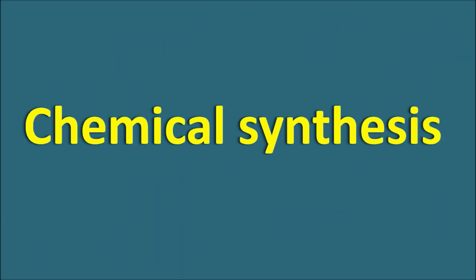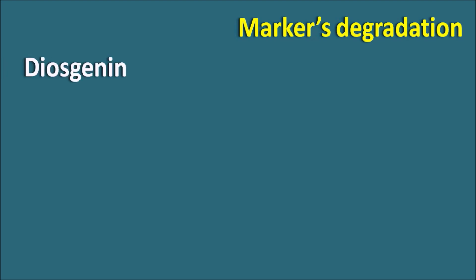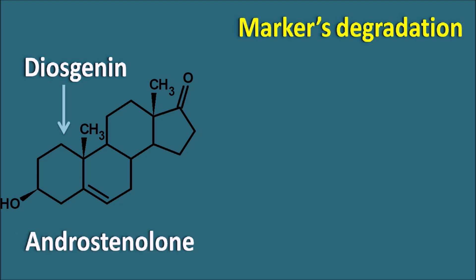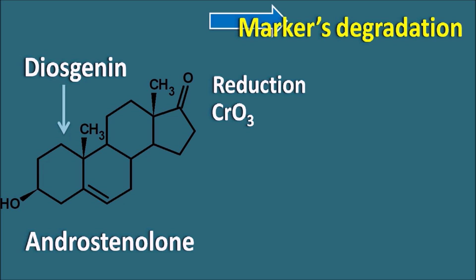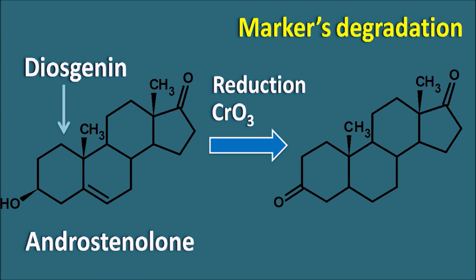Now let us see the chemical synthesis of estrogens. We can use Marker degradation, just as we have seen for androgens. Diosgenin is one precursor that can act as a source of steroidal hormones and can be converted to an important intermediate, androstenolone. This androstenolone is converted toward the estrogen nucleus by first reducing the double bond at the 5th and 6th positions, followed by oxidation with chromium trioxide, converting the OH group to a ketone and saturating the double bond.